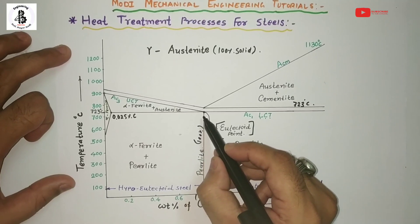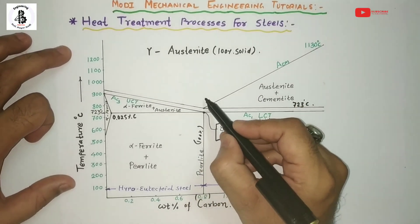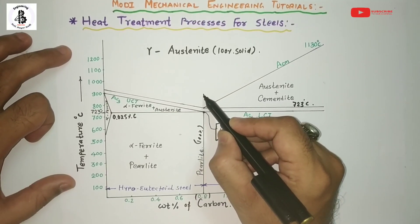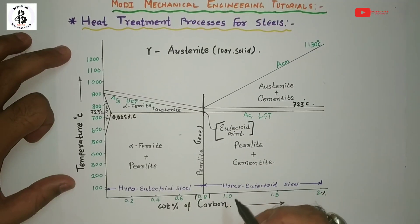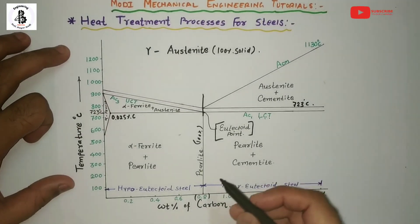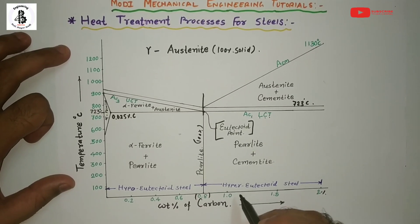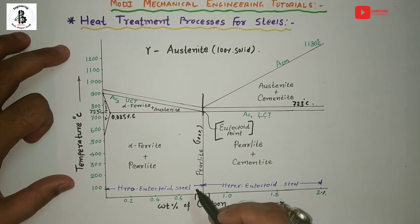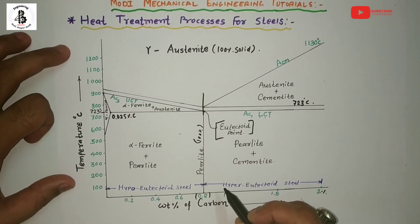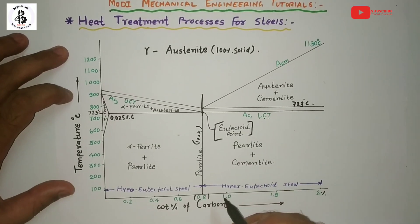The transformation passing through the eutectoid line gives eutectoid steel formation. If you want to increase the properties of steels — whether hypo-eutectoid, eutectoid, or hyper-eutectoid — you perform different heat treatment processes to enhance the mechanical properties of the steels.